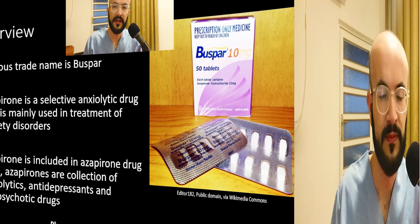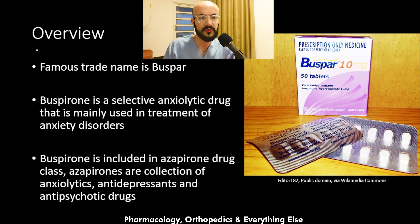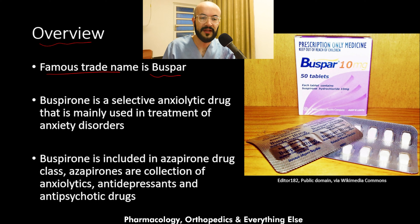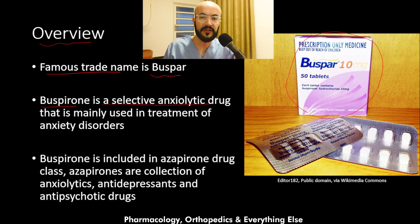Welcome back to the CNS Pharmacology Masterclass, where we talk about all the medications that work on the central nervous system. Here we will explain the pharmacology of buspirone. The buspirone is the scientific name of the medication, and a famous trade name for it is Buspir. Buspirone is a selective anxiolytic drug, meaning it works only to relieve anxiety, and that is why it is mainly used in the treatment of anxiety disorders.